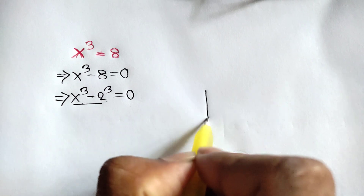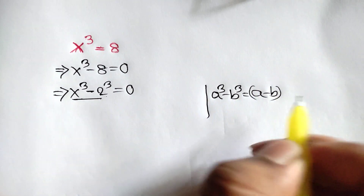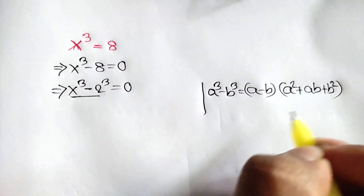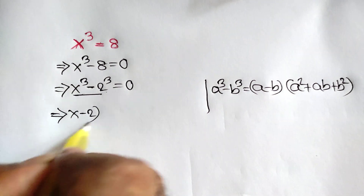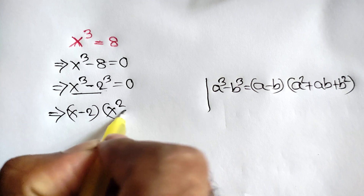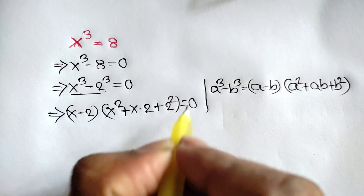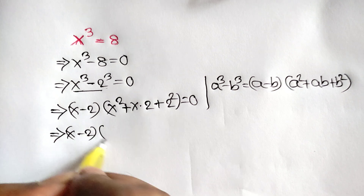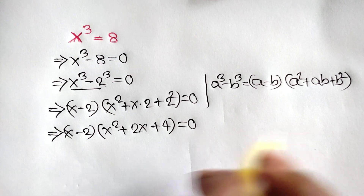Now this is like the formula a cube minus b cube is equal to a minus b times a square plus ab plus b square. Applying this formula here we can write x minus 2 times x square plus x times 2 plus 2 square is equal to 0, or x minus 2 times x square plus 2x plus 4 is equal to 0.